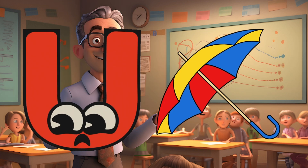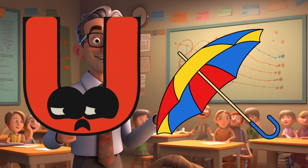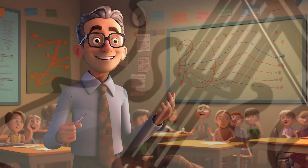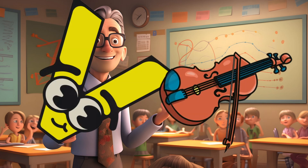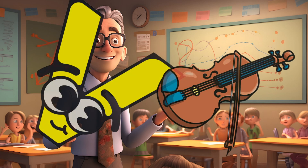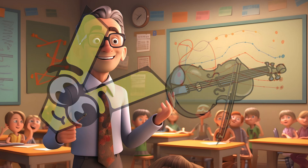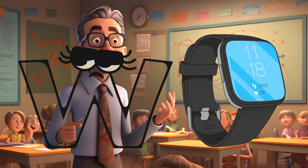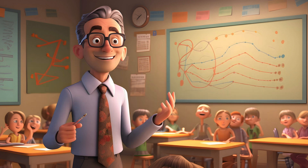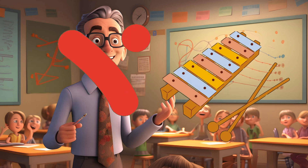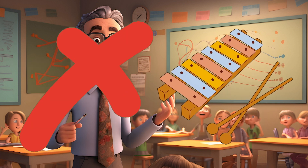U is for Umbrella. U-U-Umbrella. V is for Violin. V-V-Violin. W is for Watch. W-W-Watch. X is for Xylophone. X-X-Xylophone.